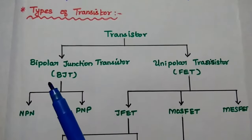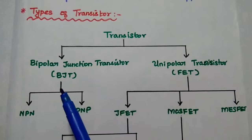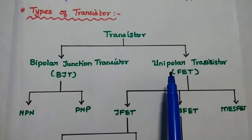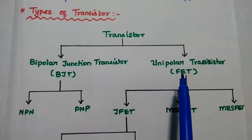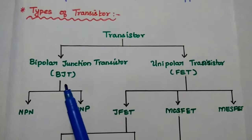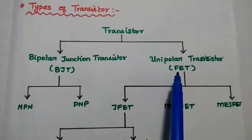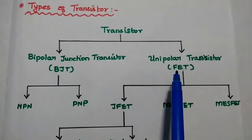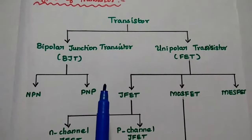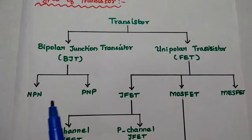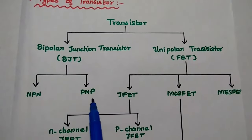Bipolar depends on majority and minority carriers, but unipolar depends on majority carriers only. The bipolar transistor is called BJT, and the unipolar transistor is FET — field effect transistor. BJT is further classified into NPN and PNP types.